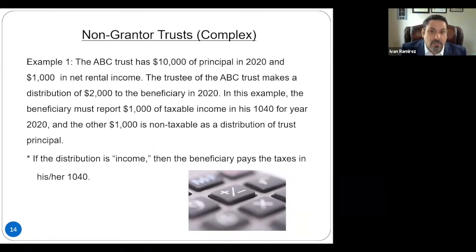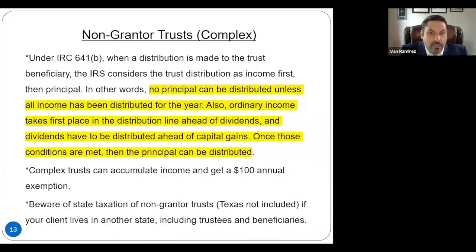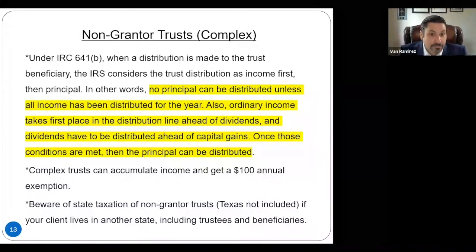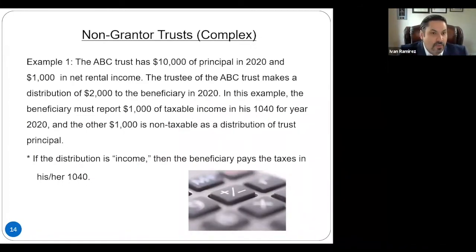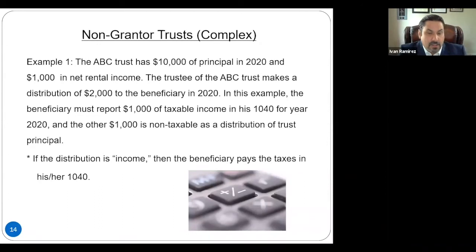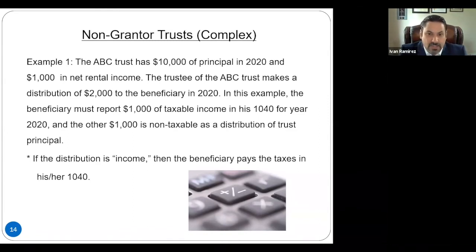Under this example, the beneficiary is going to report $1,000 of taxable income in their individual 1040 for year 2020 at their own tax rate. The other $1,000 is going to be a non-taxable distribution of trust principal. Going back to the statute: 641B says no principal can be distributed unless all the income for the year has been distributed, followed by dividends, followed by capital gains. Once those three have been satisfied, it'll be considered a distribution of principal, which is non-taxable. The trust only had $1,000 of income, they made a distribution of $2,000 — so $1,000 is taxable at the beneficiary's individual income tax level, and the other $1,000 is a non-taxable distribution of principal.